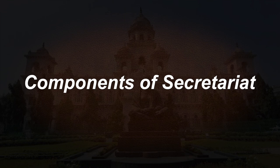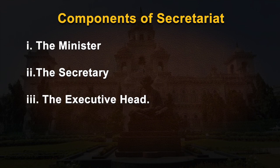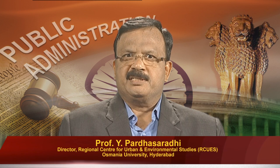The three components of the government at the state level are: one, the minister; two, the secretary; and three, the executive head. The minister and the secretary together constitute the secretariat, whereas the office of the executive head is designated as the directorate. The state secretariat, as a top layer of the state administration, is primarily meant to assist the state government in policy making and in discharging its legislative functions.